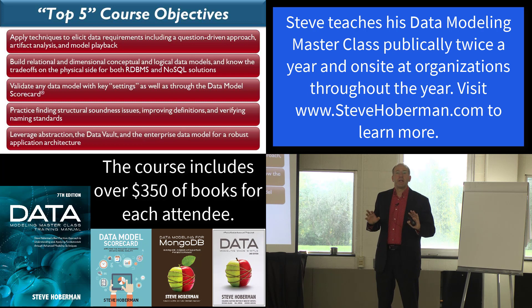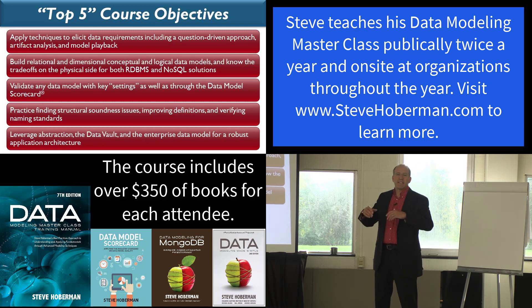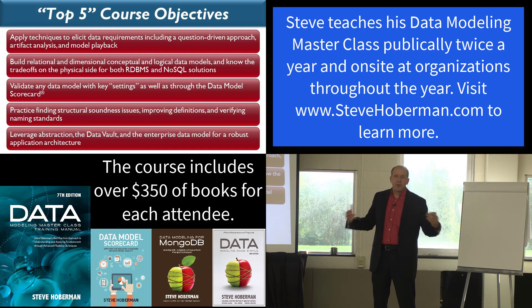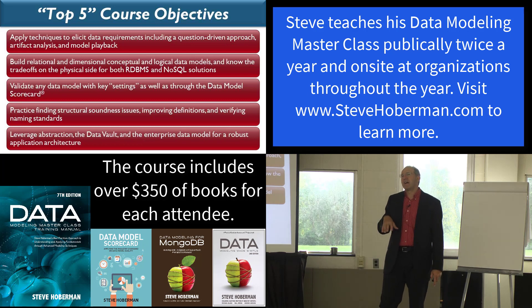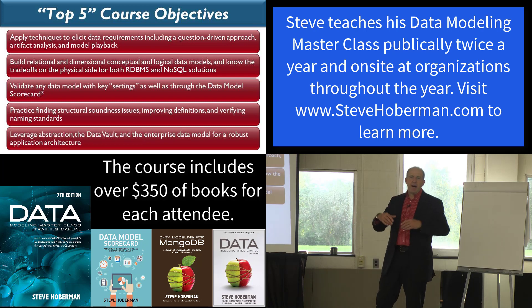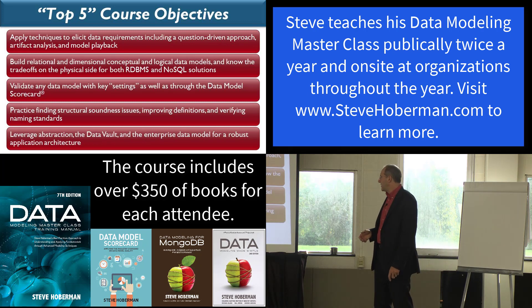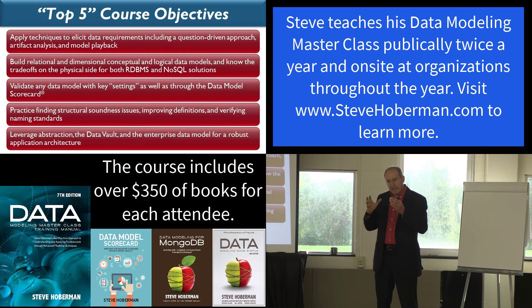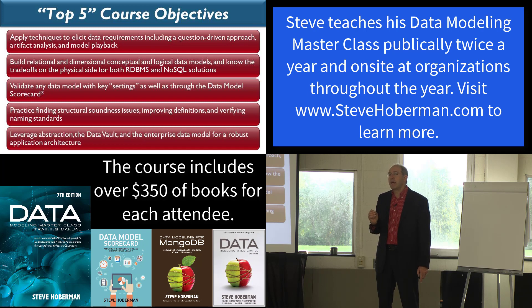The third objective is to validate any data model with key settings as well as through the Data Model Scorecard. I cover a camera analogy with five settings and how each relates to a setting on the data model. The Data Model Scorecard is a set of ten categories for reviewing the model — the whole class is organized around this technique. It's not just about how do you model; it's about how do you model well, covering best practices, structural soundness, improving definitions, and verifying naming standards.